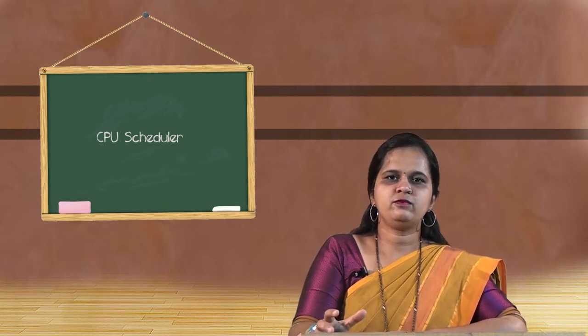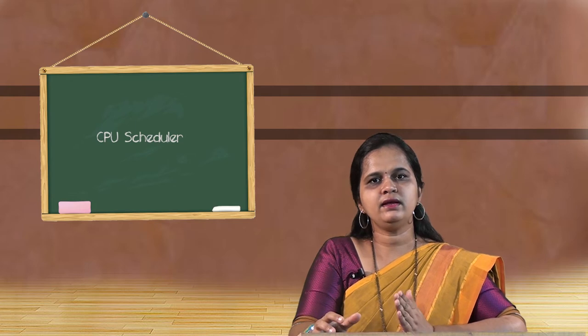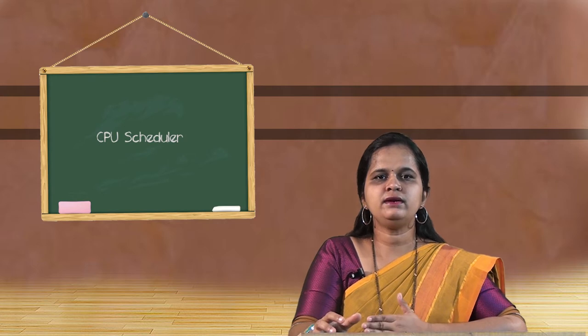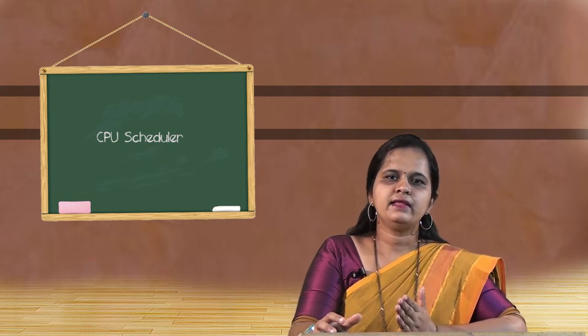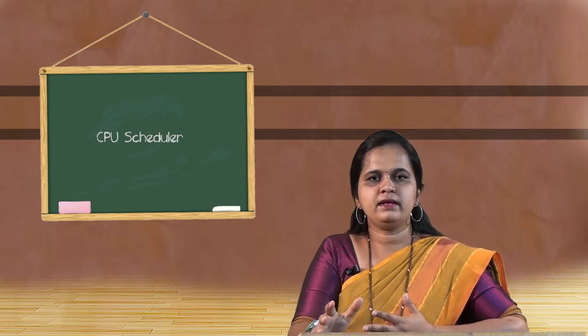Now coming very specifically to the CPU Scheduler — what the CPU Scheduler actually means. You can see in the slide there are four different steps in which the CPU switches from one state to another. Scheduling decisions are taken in these different contexts: first, when the process switches from running state to waiting state; second, when the process switches from running state to ready state; third, when the process switches from waiting state back to ready state; and fourth, when the process terminates. There are two types of CPU scheduling algorithms: preemptive and non-preemptive. Preemptive means stopping the process in the middle while it is executing in the CPU.